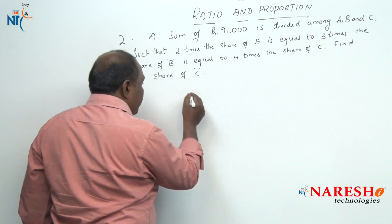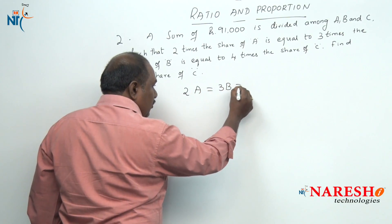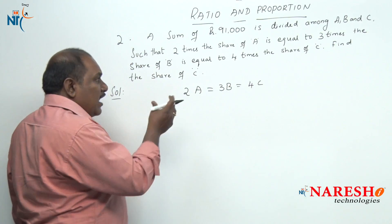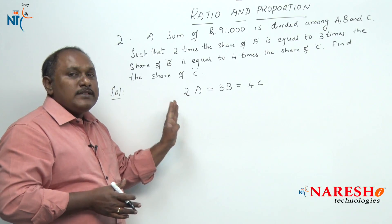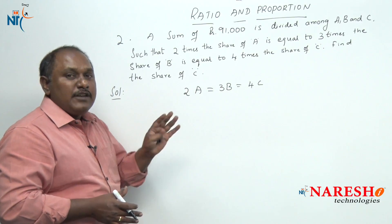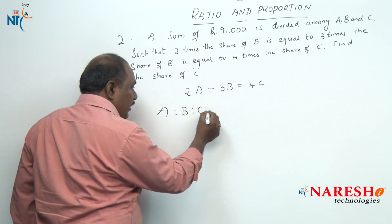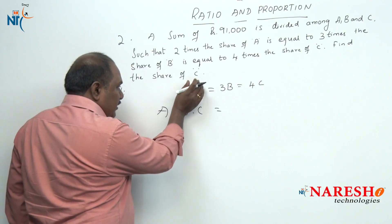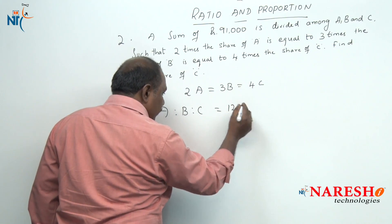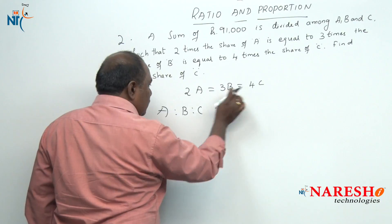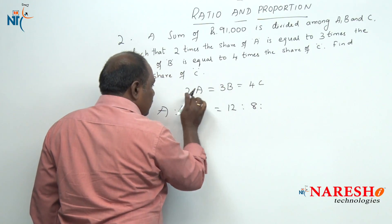From the given information, we have 2A equals 3B equals 4C. To find the ratio of A, B and C: to find A, close A and multiply the other two numbers — 3 into 4 is 12. If you want B, close B and multiply the other two numbers — 2 into 4 is 8. You want C, close C and multiply the other two numbers — 2 into 3 is 6.